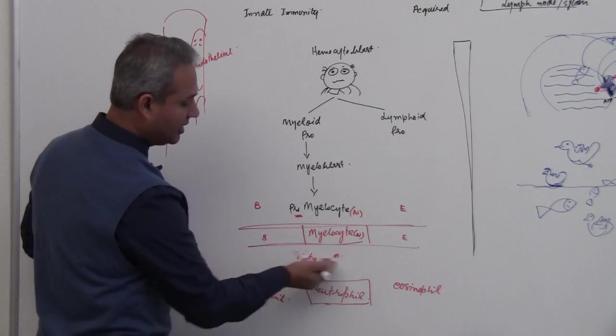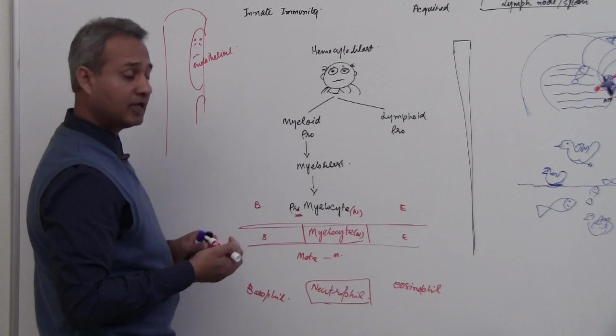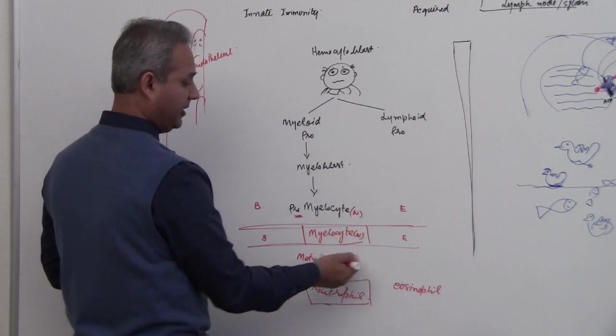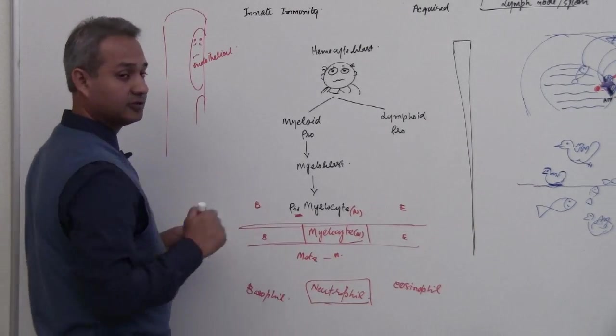Similarly, after the myelocyte you would get metamyelocyte, and metamyelocyte again same thing: metamyelocyte neutrophil, metamyelocyte eosinophil, metamyelocyte basophil.